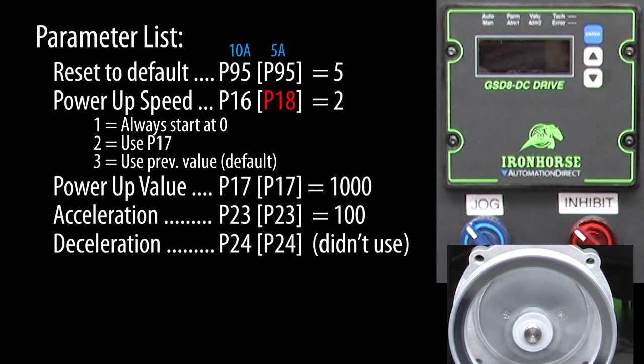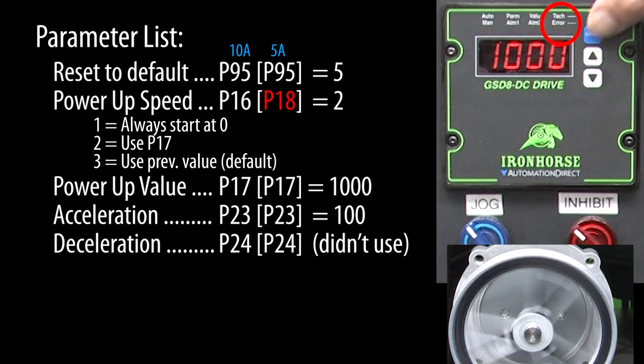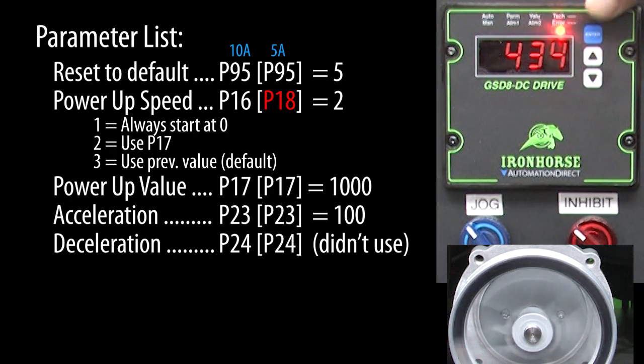I'll power down, give it a second, and power back up. Briefly pressing the enter button shows you the current tach value while the tach LED is lit. I'll press it a couple more times and sure enough we see it took about 10 seconds to ramp up to speed.